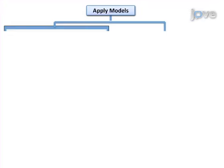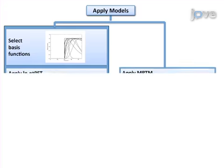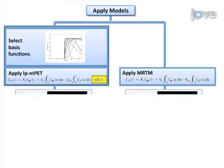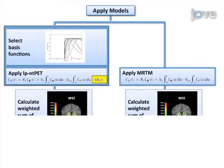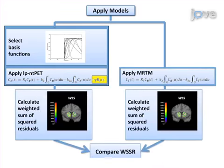Next, the time activity curves are modeled at the voxel level with LPNT PET, and the resulting dopamine curves are retained only for those voxels that are well-fit by the model.